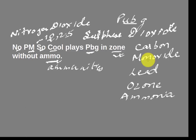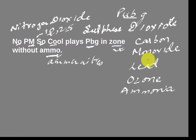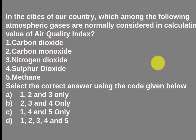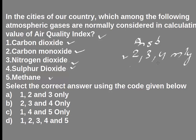Now let us solve a question that came in UPSC: 'In the cities of our country, which among the following atmospheric gases are normally considered in calculating the value of air quality index?' The options are carbon dioxide, carbon monoxide, nitrogen dioxide, sulfur dioxide, and methane. Using the trick, the answer is carbon monoxide, nitrogen dioxide, and sulfur dioxide. Carbon dioxide and methane are not considered, so the answer is options 2, 3, and 4 only.